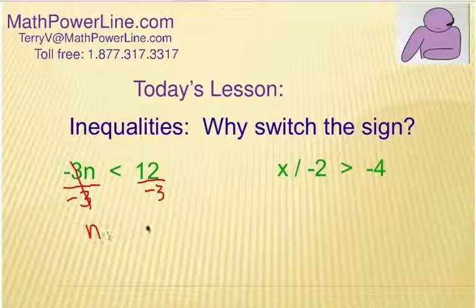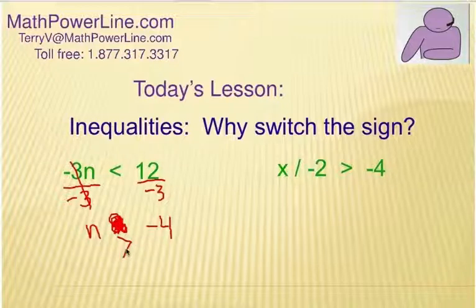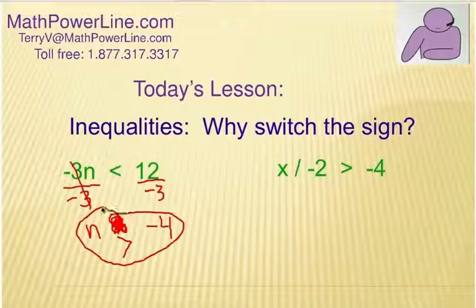And so n, and then over here is negative 4. And then a lot of times, without thinking, students will just copy the inequality symbol down. But there is a rule, and that's probably why you're here watching this video, that says you need to switch the inequality. So now it's n is greater than negative 4. The only numbers that solve that inequality are numbers that are larger than negative 4.